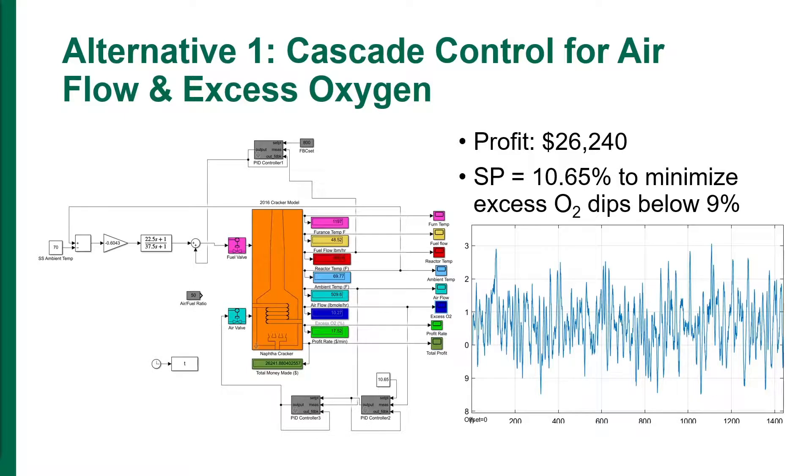Two alternative control schemes were considered to control the excess O2. In the first alternative, the ratio control was replaced with the cascade control. The inner loop, PID controller 3, controls the air flow, while the outer loop controller, PID controller 4, controls the excess O2. The profit was $26,240. While the profit was higher, the oxygen dipped below the 9% allowed value multiple times during the day. The set point had to be raised to 10.65%, but even then, the issue remained and the oxygen still dipped below the 9% six times during the day.